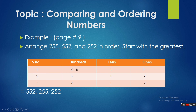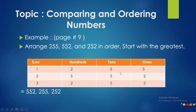Now compare the rest of the two numbers. The hundreds digits are both 2, they are the same. So we look at the tens place — again both digits are the same. So we look at the ones place, and digit 5 is greater than 2. This means 255 is greater than 252, so the second greatest number is 255.